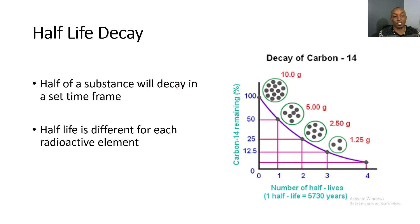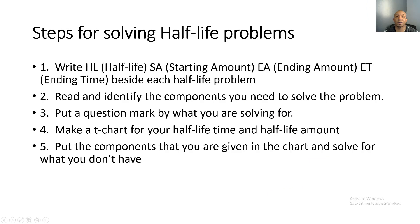Now let's take a look at half-life decay. Half-life means half of a substance will decay in a set time frame, and half-life is different for each radioactive element — some elements have half-lives of a couple of days, hours, minutes, or even years. For example, Carbon-14 has a half-life of 5,730 years. So a 10-gram sample would decay to 5 grams after 5,730 years, then to 2.5 grams, then to 1.25 grams.